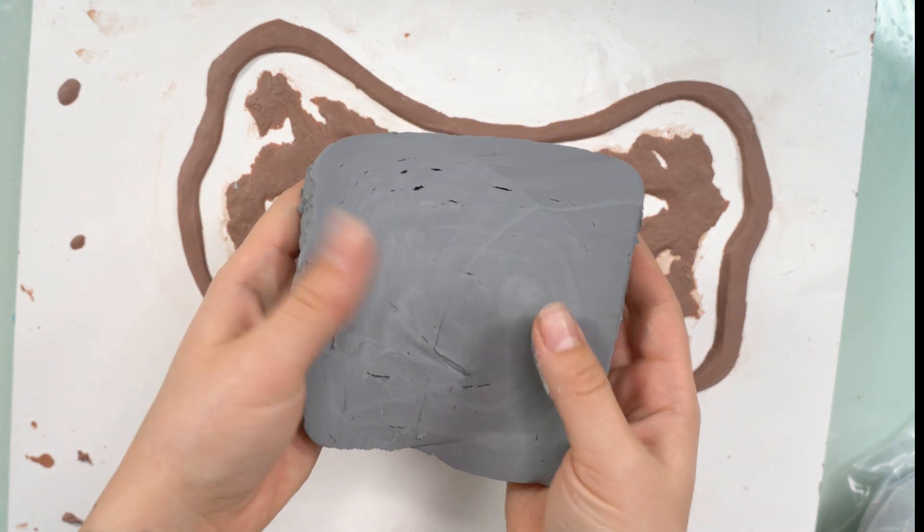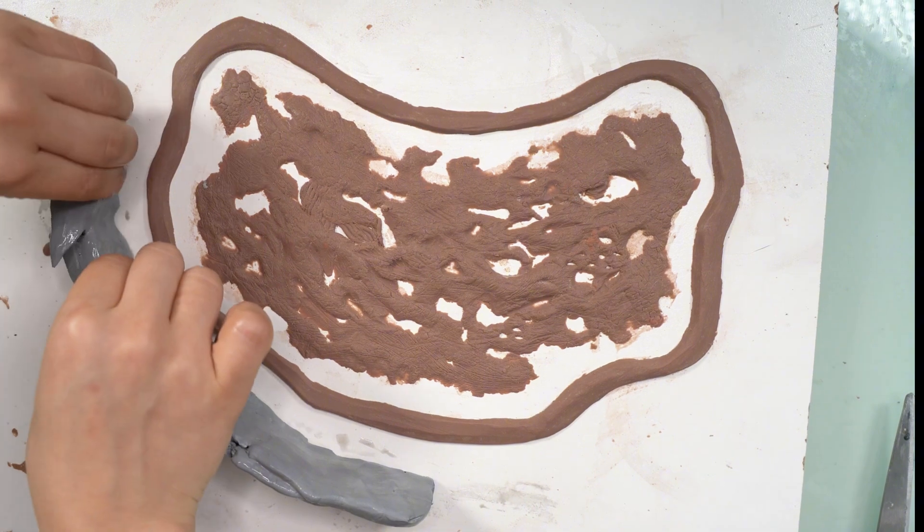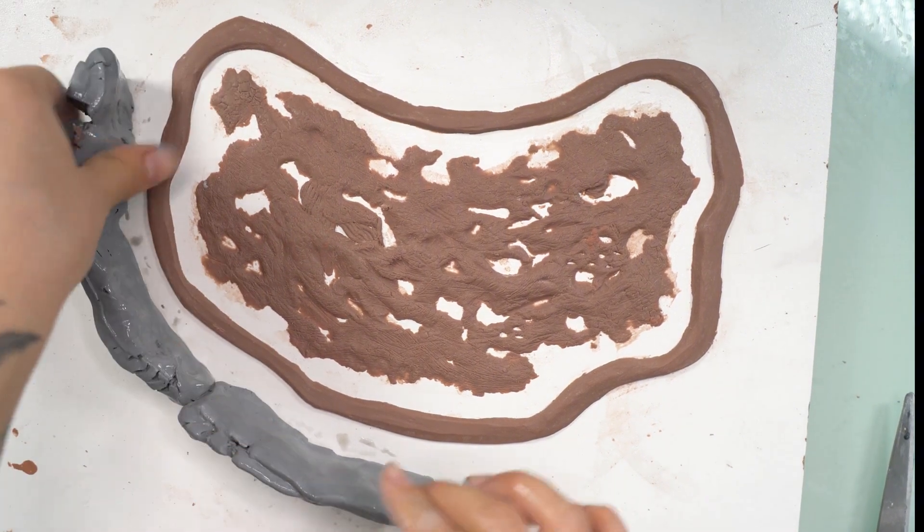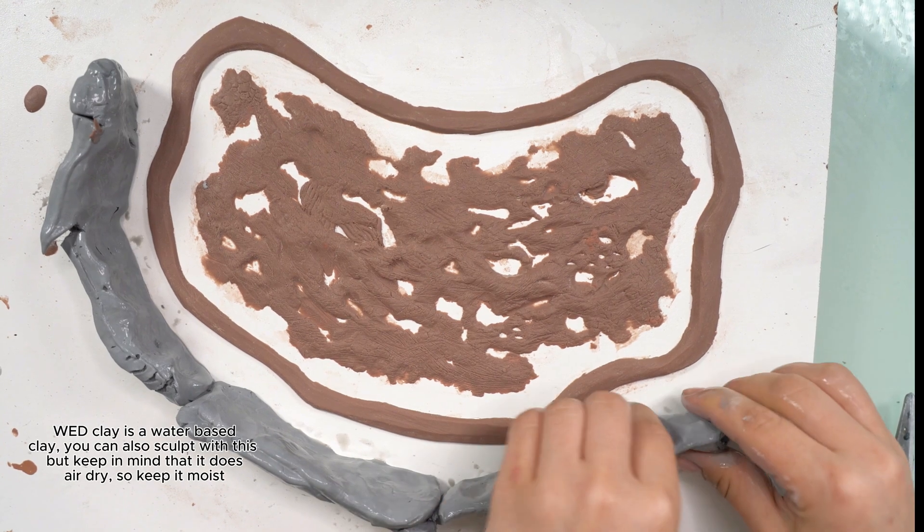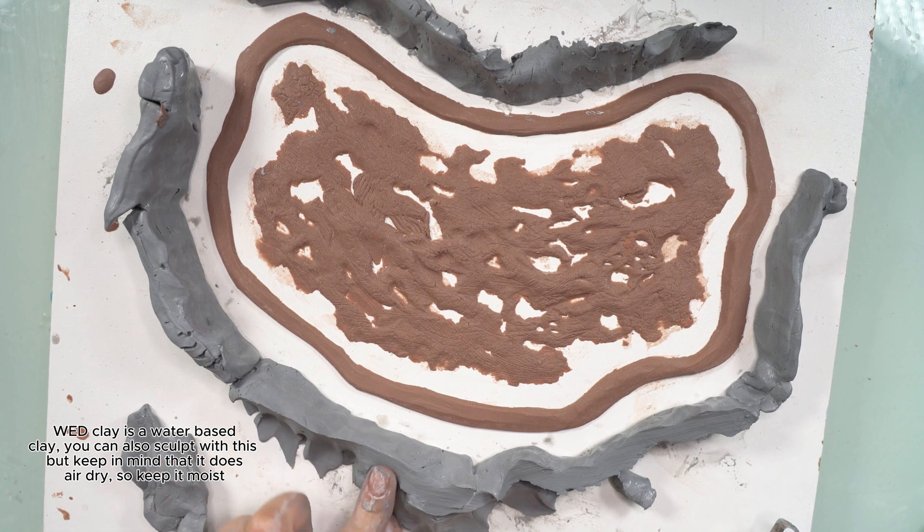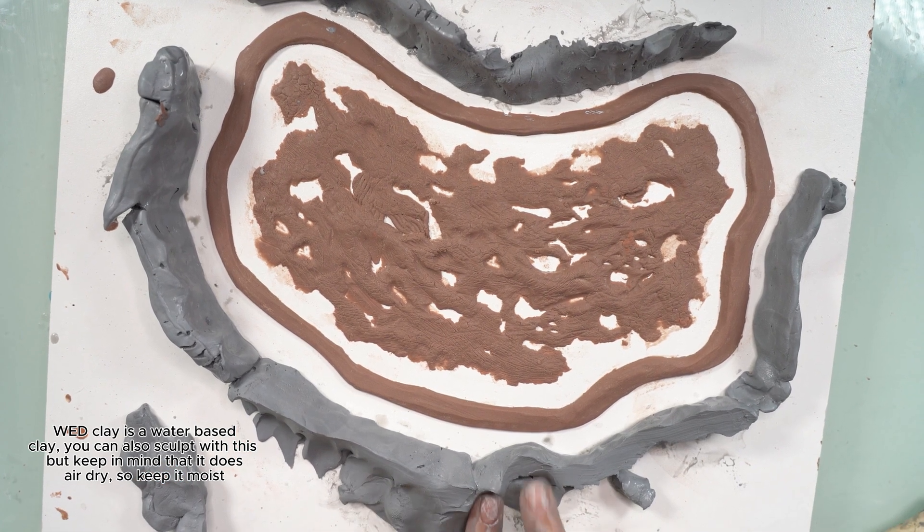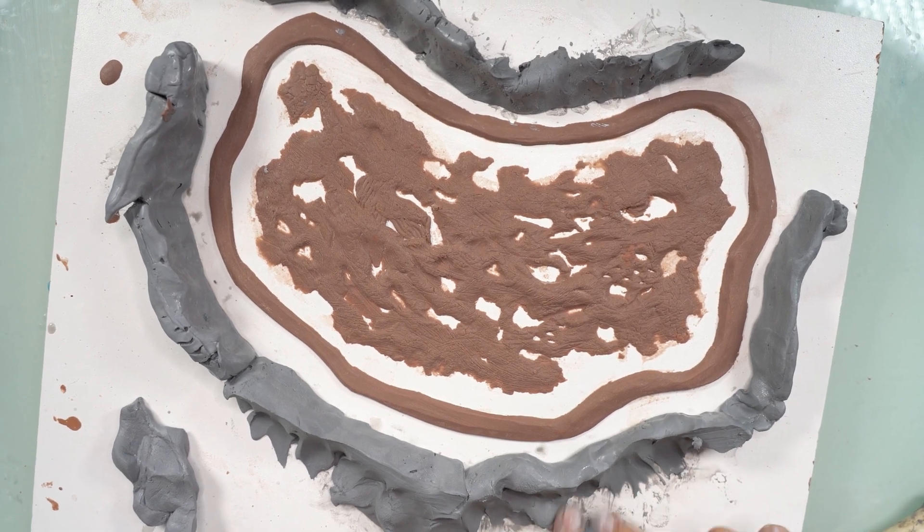But once you finish your sculpt, you want to build a border around it. I'm building mine up with wed clay. I believe this is the most popular method, but there are a few different ways you can do this. I used to build mine up with cardboard and hot glue, but it got kind of messy and it would stick to the silicone. Make sure you're also going around the edges and sealing up any little holes or gaps because you don't want the silicone to leak out.